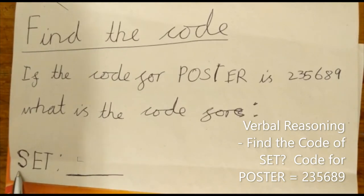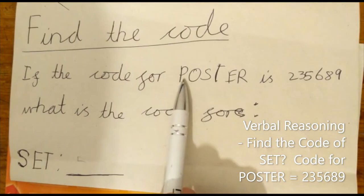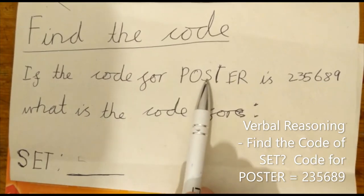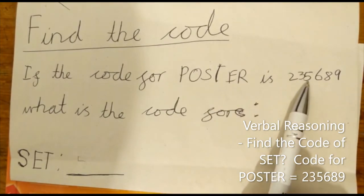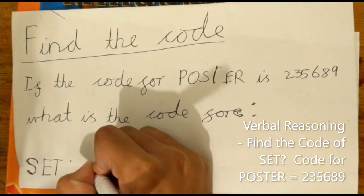The first letter in set is S. We need to find S in the word poster. S is the third letter, so we need to find the third number in this code. The third number is 5, so the first number for the code will be 5.